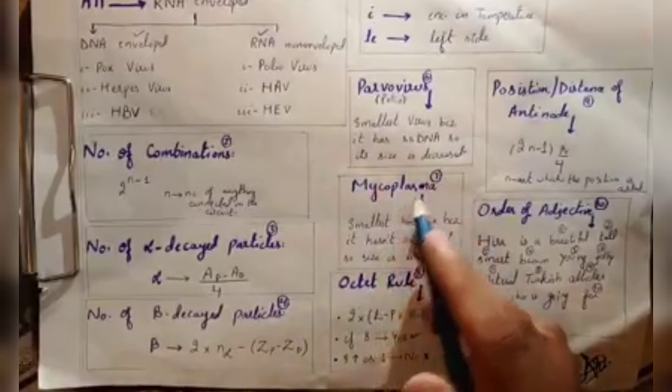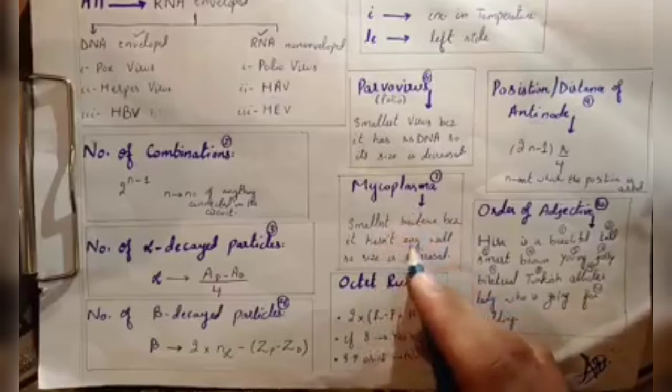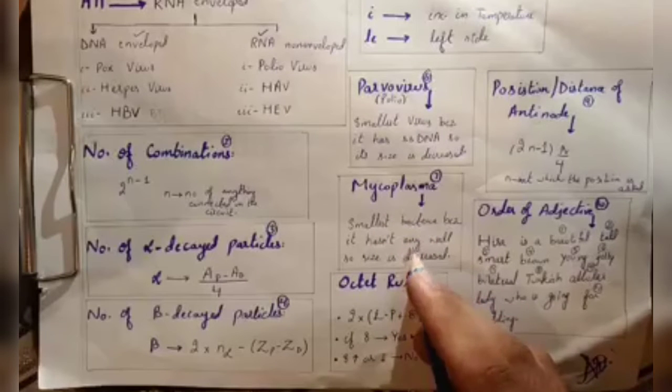The smallest bacteria is mycoplasma. I remember that there is no cell wall. When there is no cell wall, it will shrink and be small.